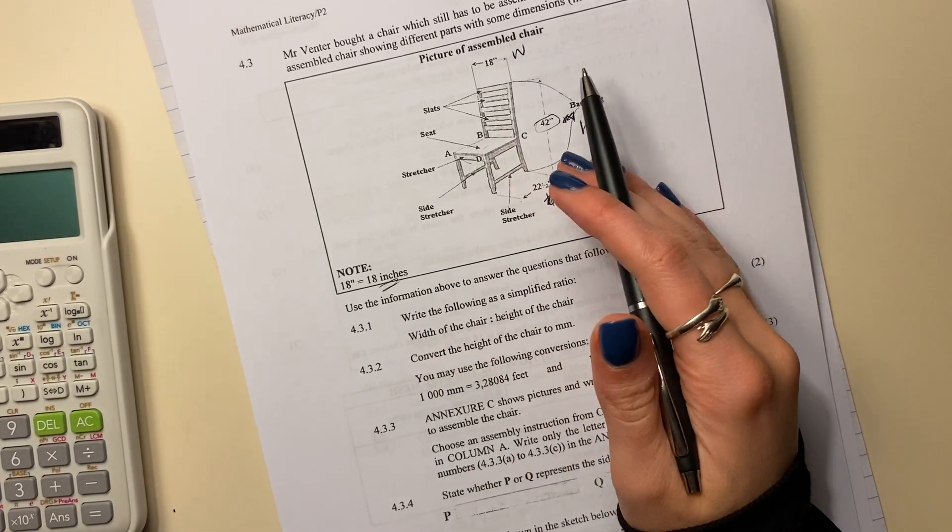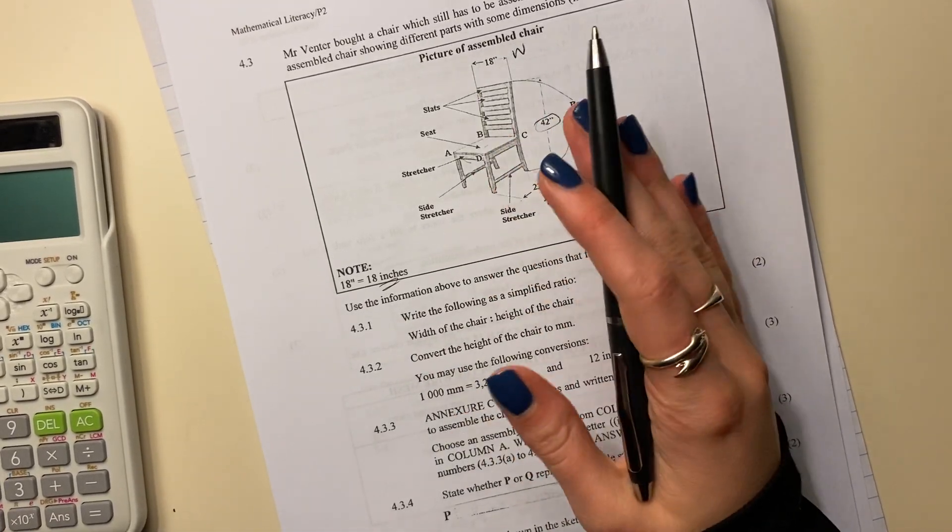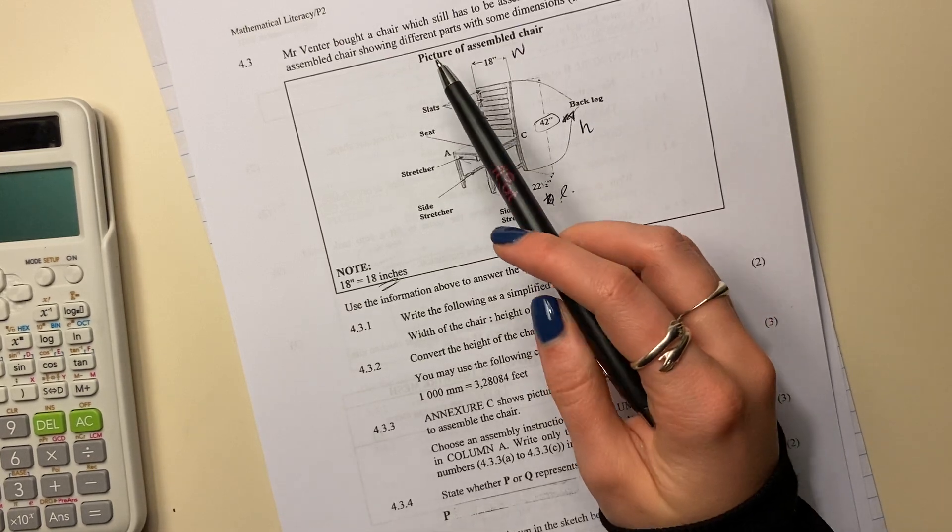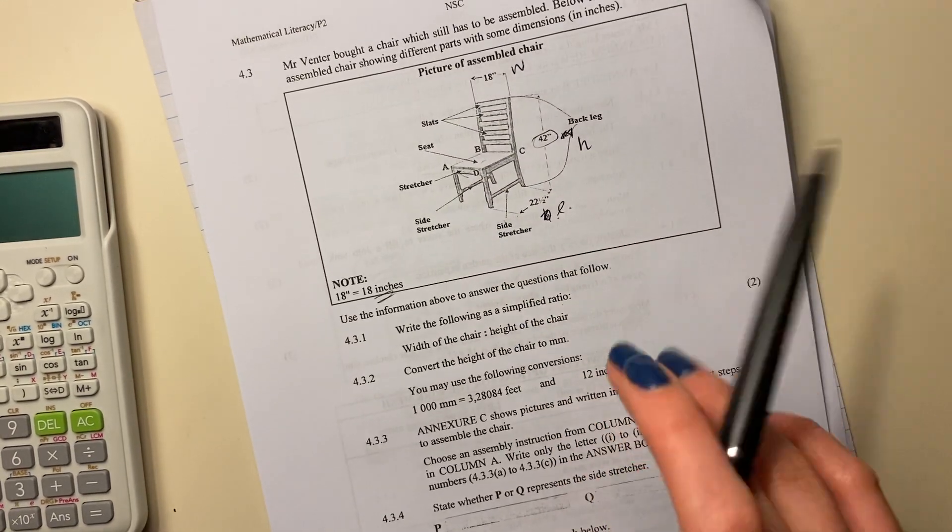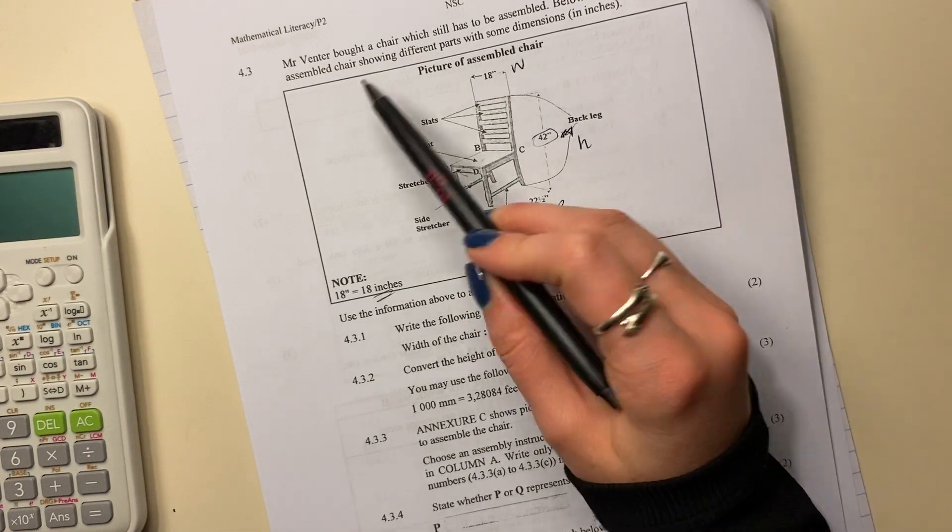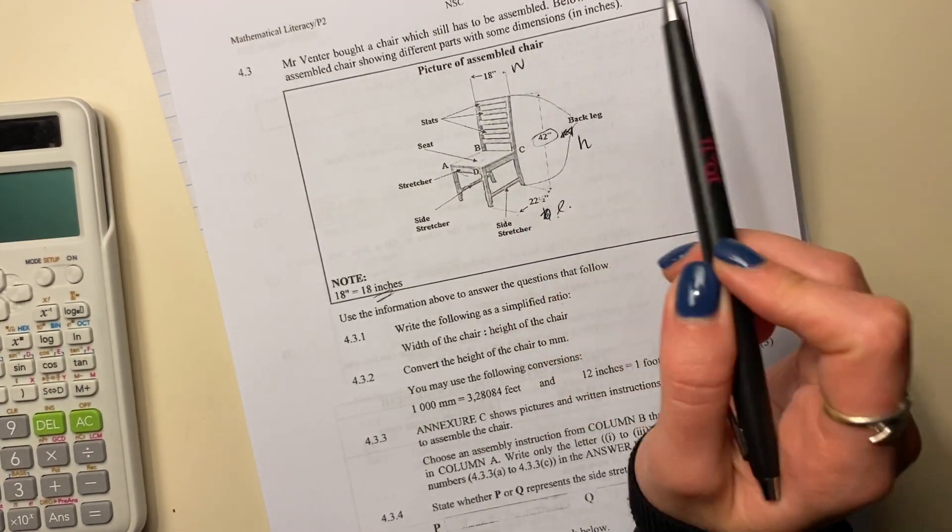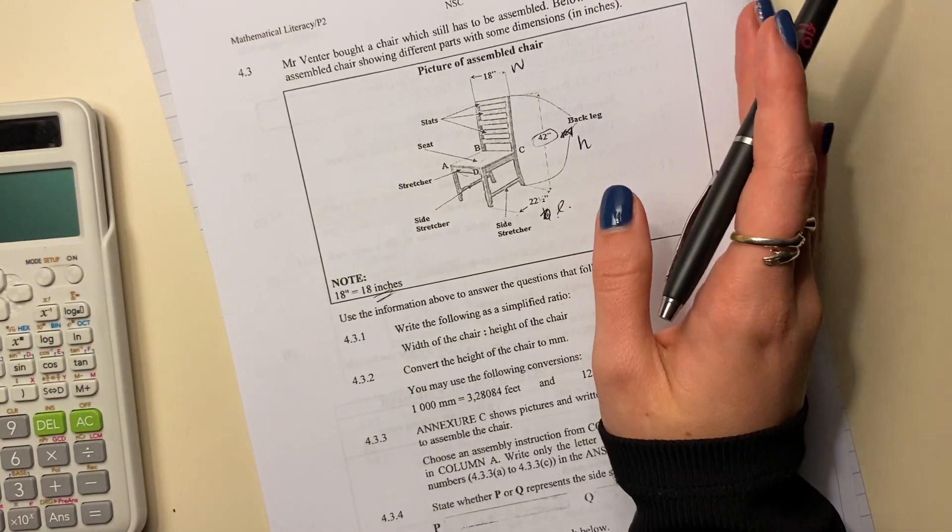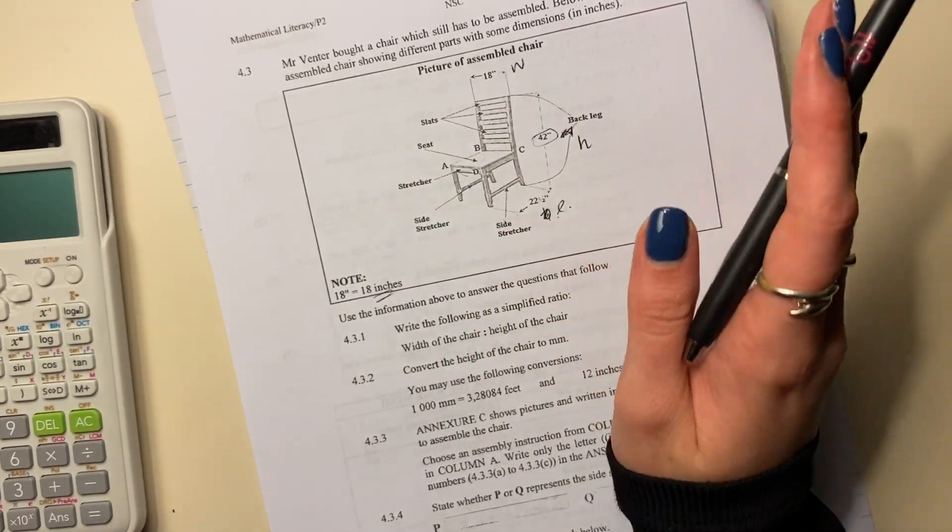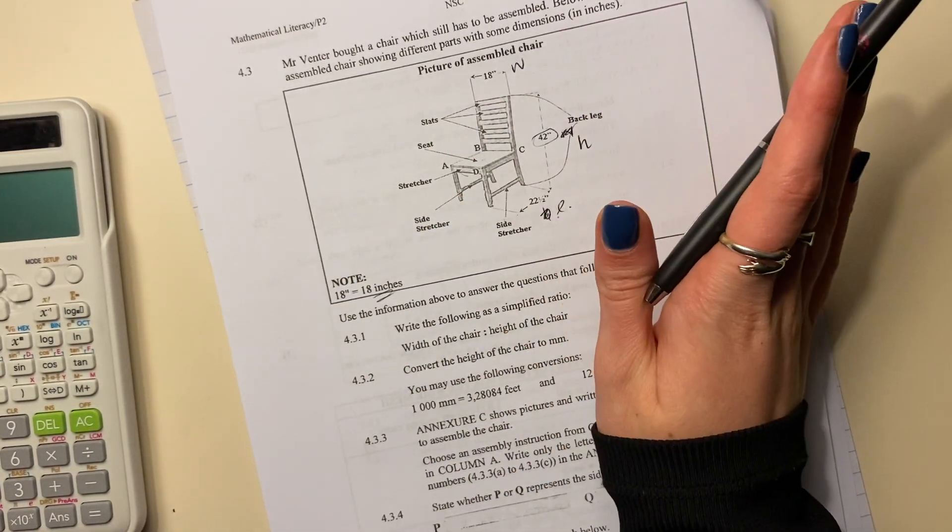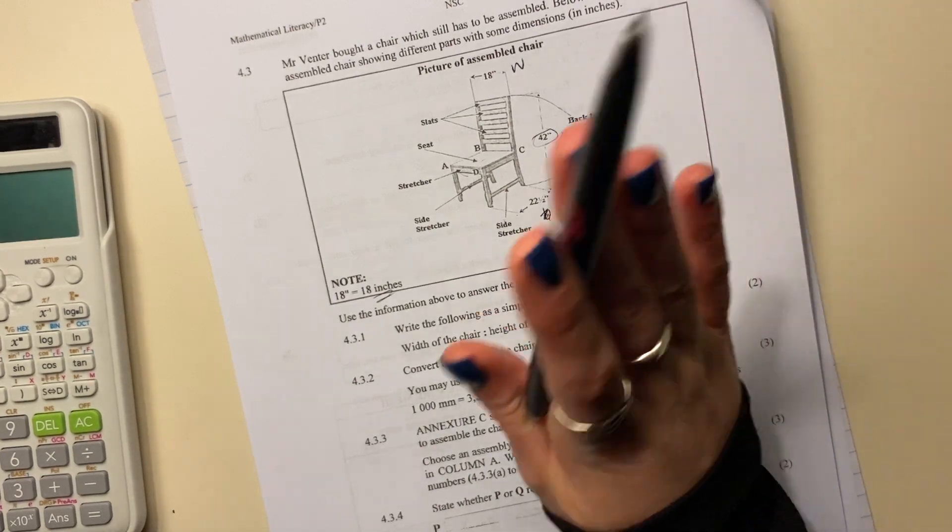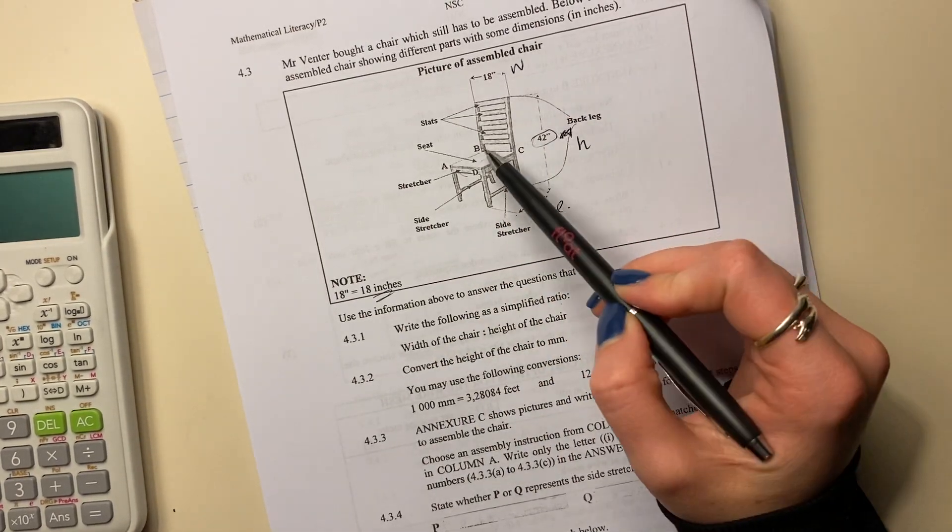Okay, let's do question 4.3. This is the third time I'm trying this, so hopefully it goes alright now. Mr. Fenter bought a chair which still has to be assembled. Below is a picture of the assembled chair showing different parts with some dimensions in inches. I hate these questions. I'm so bad at assembling stuff and seeing things in 3D, so we all have sections that we struggle with. Let's just get through it, be logical, and address the questions.